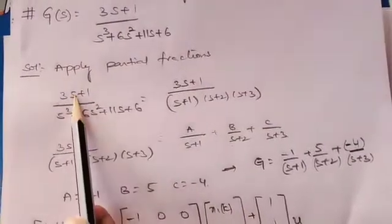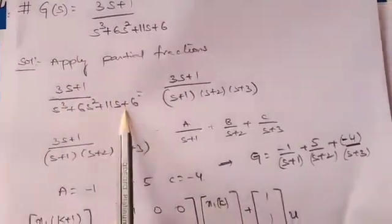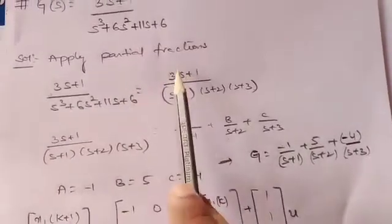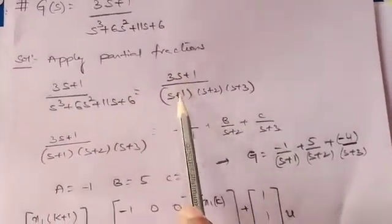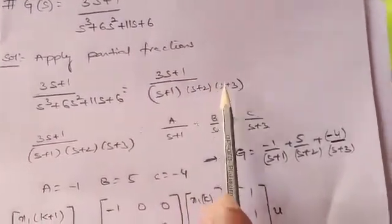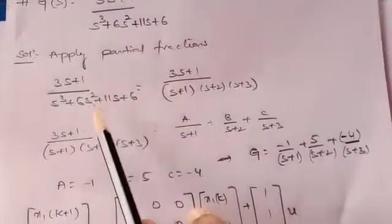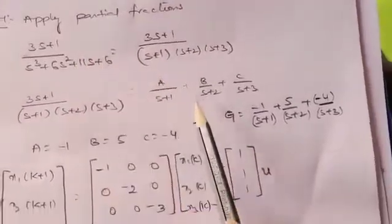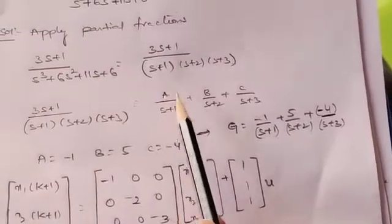This expression (3s + 1) / (s³ + 6s² + 11s + 6) can be written as (3s + 1) / [(s + 1)(s + 2)(s + 3)]. If you multiply all three terms you will get the original denominator. By applying partial fractions we can write: A/(s+1) + B/(s+2) + C/(s+3).